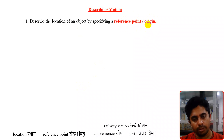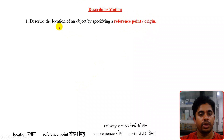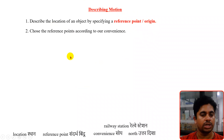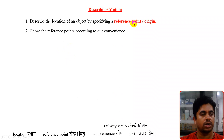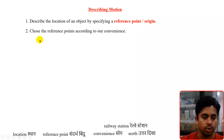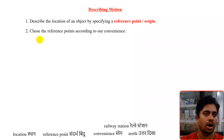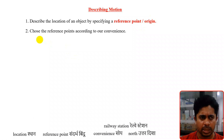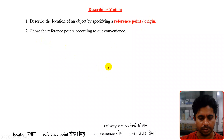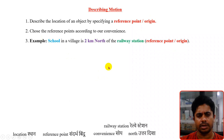With reference to that point we will locate the object. The question is: how do we choose the reference point or origin? The answer is to choose it according to our convenience — whichever point is easiest. Let us take an example.